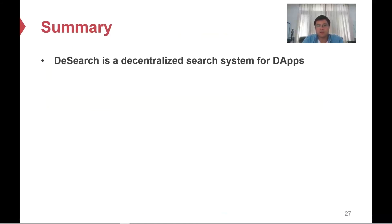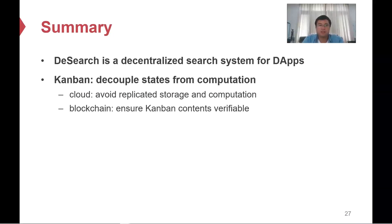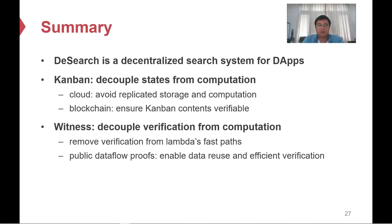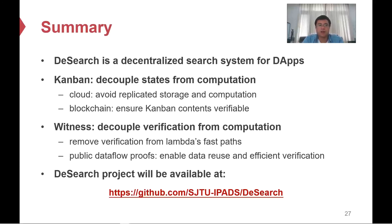Let us summarize our work. D-Search is a decentralized search system for existing DApps. To tackle the decentralization challenge, we decouple states from computation by introducing Kanban, which combines cloud and blockchain. Cloud avoids replicated storage and computation, and blockchain ensures Kanban contents are verifiable. To make the results verifiable on untrusted workers, we introduce witnesses, which decouple verification from computation. This removes verification from the fast path of the Lambda, and the witnesses, as public data flow, can enable data reuse for efficient verification. Thank you very much.